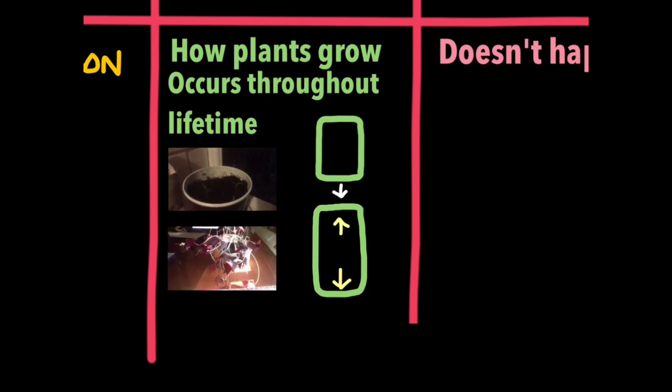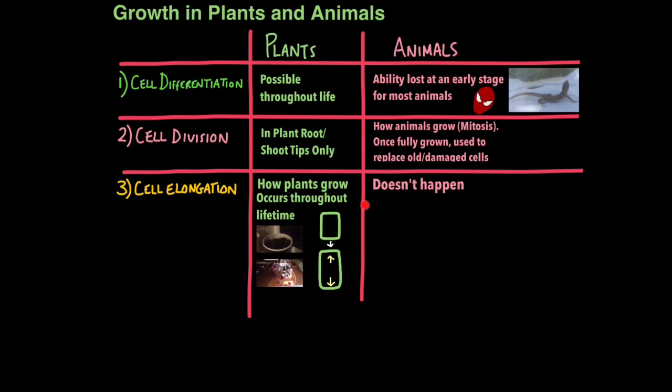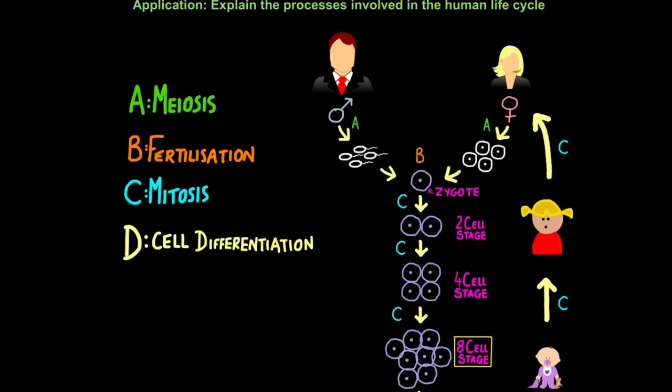So plants grow continuously. In animals, cell elongation does not occur. I thought this would be a good time to tie in a lot of what we've learned about growth and development with an applied question. The question is, explain the processes involved in the human life cycle. There's four processes you need to know. Meiosis, fertilization, mitosis, and cell differentiation.